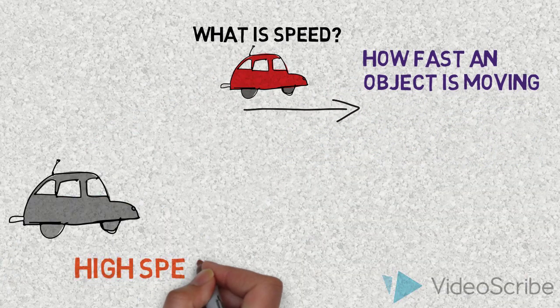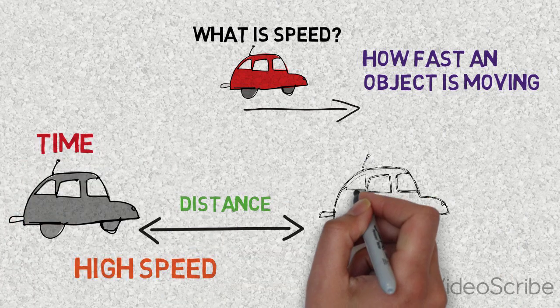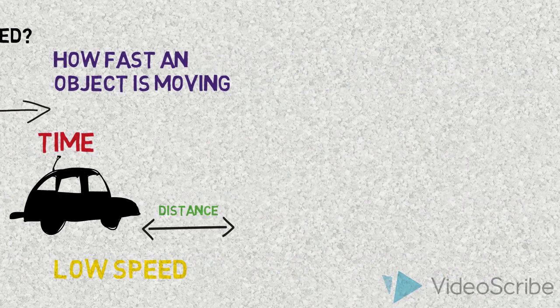An object with a high speed covers a relatively large distance in a short amount of time. In contrast to this, an object that has a low speed covers a relatively small amount of distance in the same amount of time.